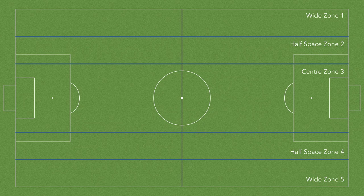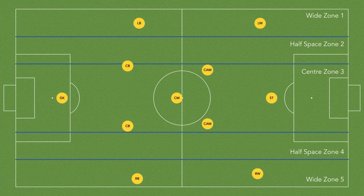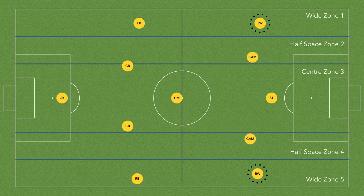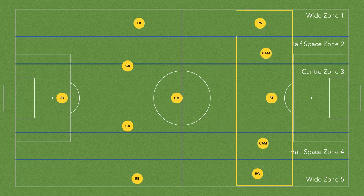In this example our starting formation is the 1-4-3-3. The first way that we can create this shape is to use what we call inverted fullbacks. To create the front 5, our wide players will maintain wide positions in zones 1 and 5. Then the two advanced midfielders will play in the half spaces but higher up. This will then complete the front 5.